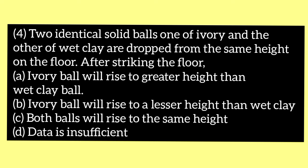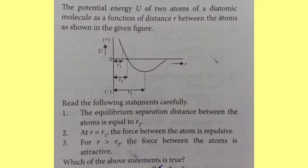Moving on to the next question: two identical solid balls, one of ivory and the other of wet clay, are dropped from the same height on the floor. After striking the floor — option A ivory ball will rise to a greater height than wet clay ball, option B ivory ball will rise to a lesser height, option C both balls will rise to the same height, option D data is insufficient. The answer is option A, ivory ball will rise to a greater height.